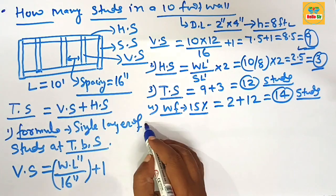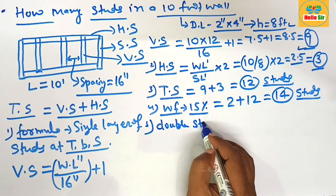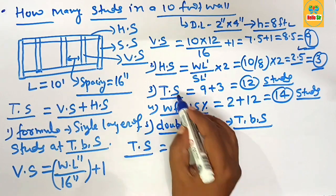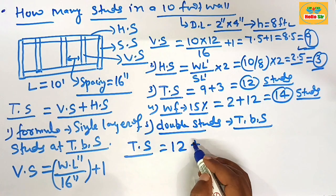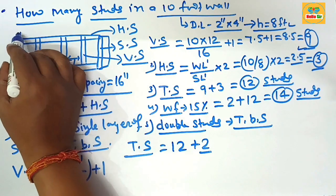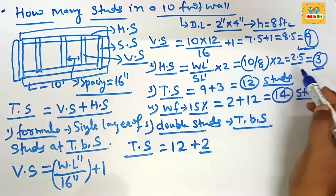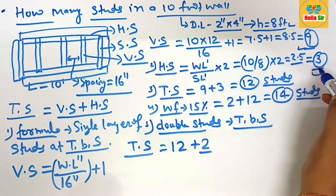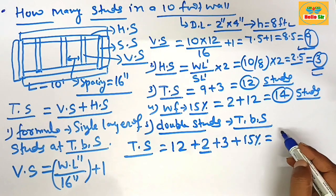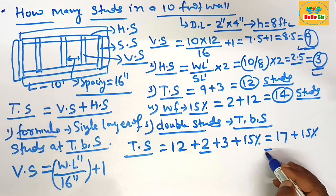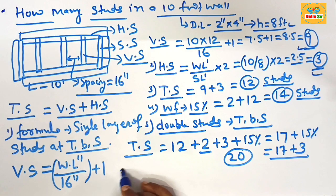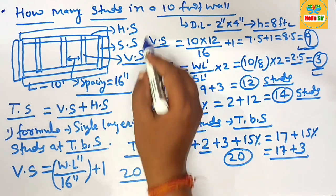If you have double studs at the top, bottom, and side wall, figure out the total number of studs as follows: the single layer requires 12 studs, plus 2 more vertical studs at the sides, and 3 more horizontal studs for the double layer at top and bottom — giving 17 studs. Adding 15 percent extra: 17 plus 3 equals approximately 20 studs for a 10-foot wall with double studs.